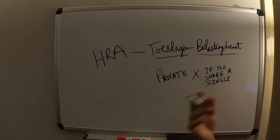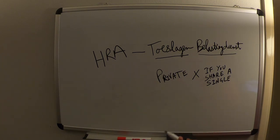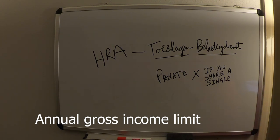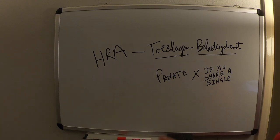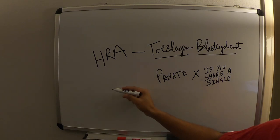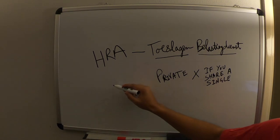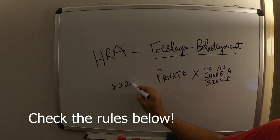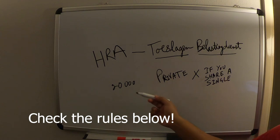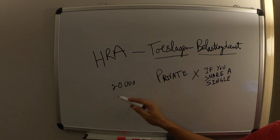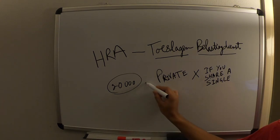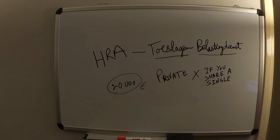The contract must be in one person's name only — not in two or more persons' names. Then you are eligible for the allowance. You should also have a certain gross income limit. Normally when you are a student your gross income is always below that limit. I don't remember exactly, but it was something around 20,000 euros gross income. You can find the exact figure in the rules — I'll enclose the link below.